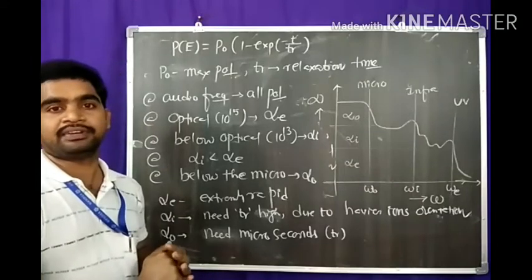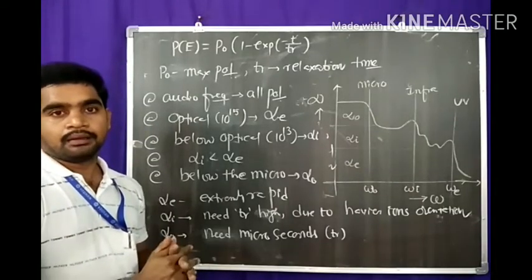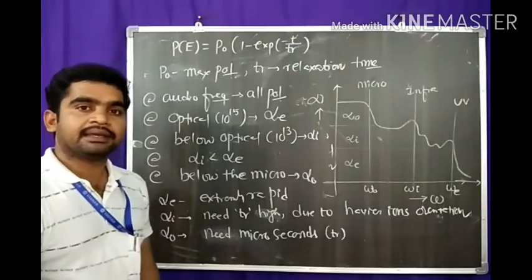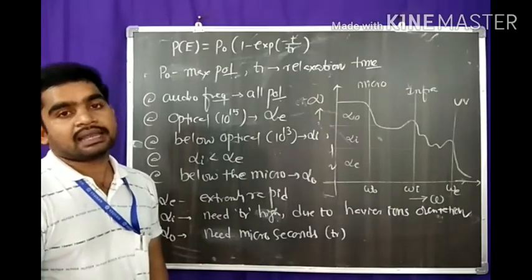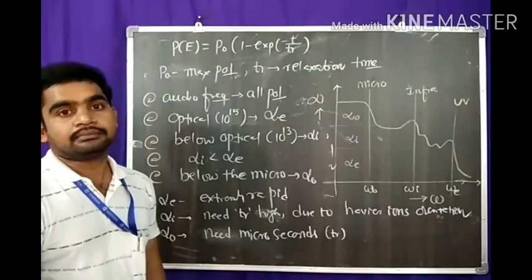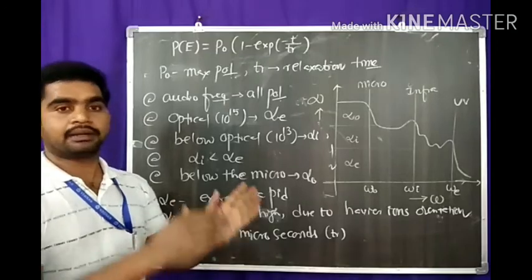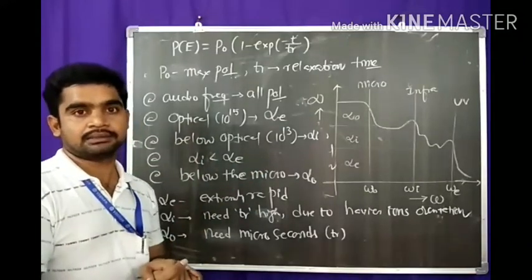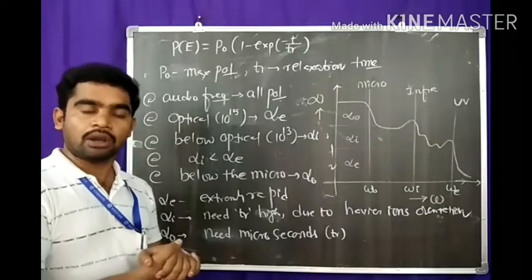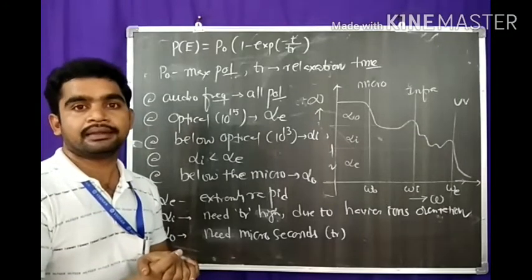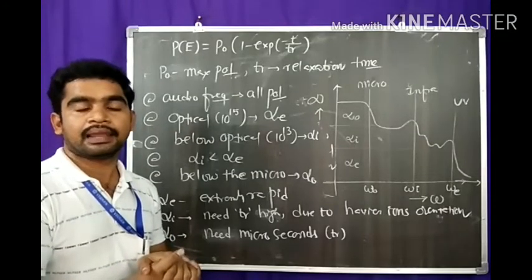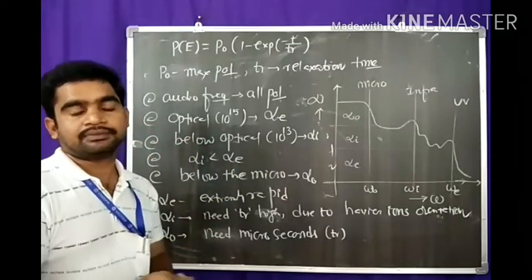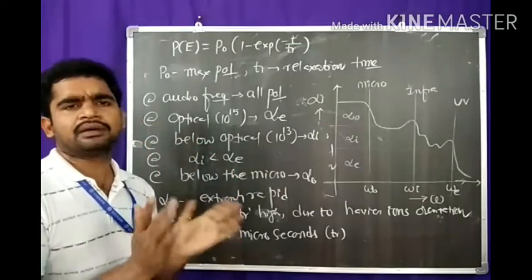In the case of electronic polarization, we need less relaxation time because only the electron cloud is displaced. For that we need less time, making it extremely fast and active at optical frequencies.